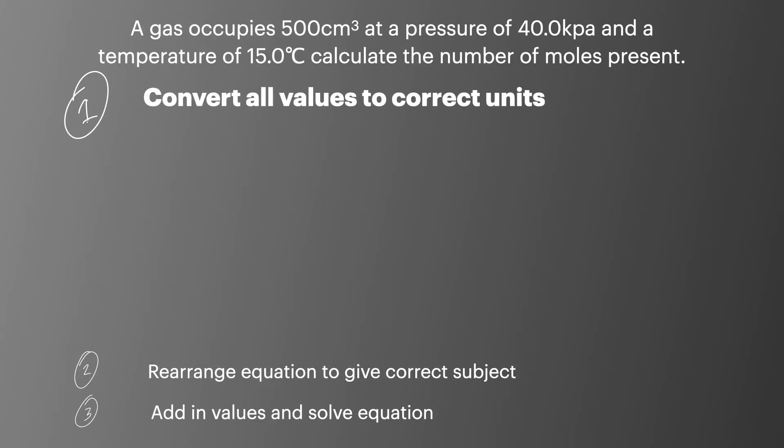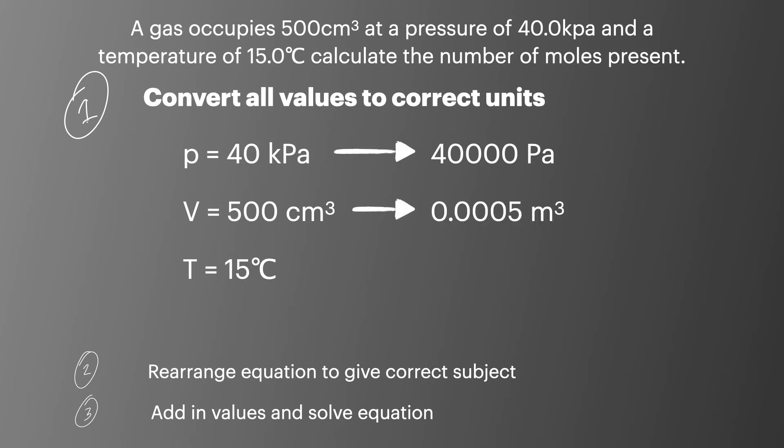First up, when it comes to converting all the correct values, first of all, I like to list out the values from the question. So I'll find pressure is 40 kilopascals. I'll find the volume to 500 centimeters cubed. And the temperature is 15 degrees Celsius. I'll then carry out the unit conversions, showing that I've converted 40 kilopascals to 40,000 pascals, volume down to 0.0005 meters cubed, and temperature to 288 Kelvin. And make this really clear for the examiner because this often is awarded marks.